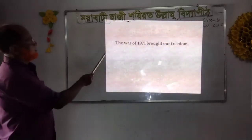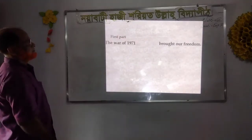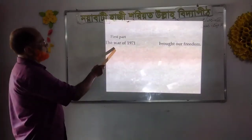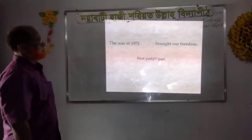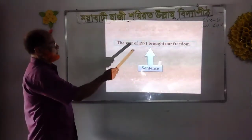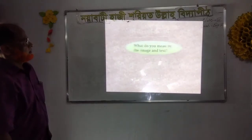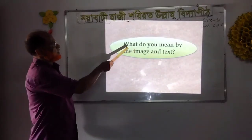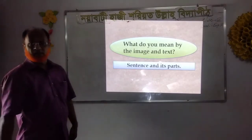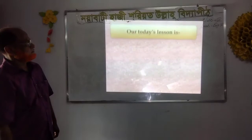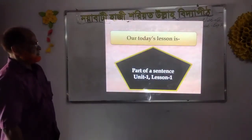Look at the picture. The war of 1971 brought our freedom. Learners, you can see two parts: one part — 'the war of 1971' — and second — 'brought our freedom.' Together it is a sentence, a complete sentence. So students, what do you mean by a sentence and its parts? Our today's lesson is: parts of a sentence.